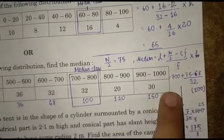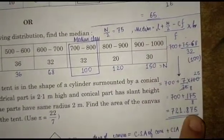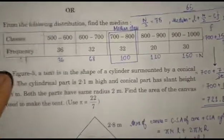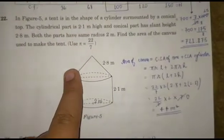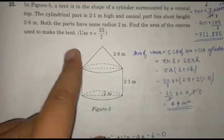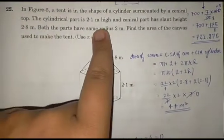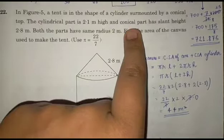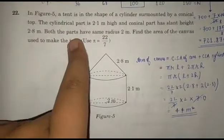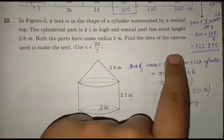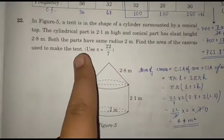Question 22: In figure 5, a tent is shown surmounted by a conical top. The cylindrical part is 2.1 meters high and the conical part has a slant height of 2.8 meters. Both parts have the same radius of 2 meters. Find the area of canvas used to make the tent, using π = 22/7.